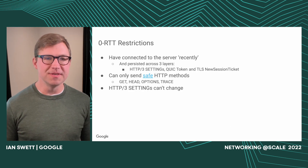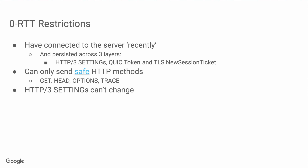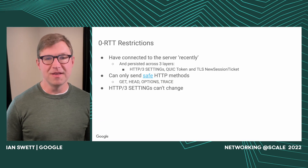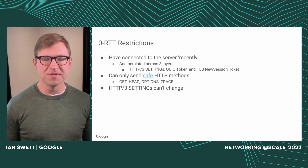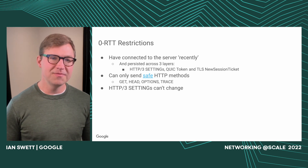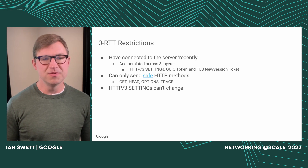There are also some restrictions on 0-RTT. You have to have connected to the server recently, and most importantly, you have to have persisted three pieces of information across three different layers. At the HTTP layer, you have to have persisted settings. At the QUIC layer, the token to allow address validation. At the TLS layer, the new session ticket to allow TLS resumption as well as 0-RTT. You can also only send safe HTTP methods — GET, HEAD, OPTIONS, and TRACE — with GET being most interesting for web use cases. Finally, the HTTP/3 settings can't change between the initial connection and the 0-RTT connection.